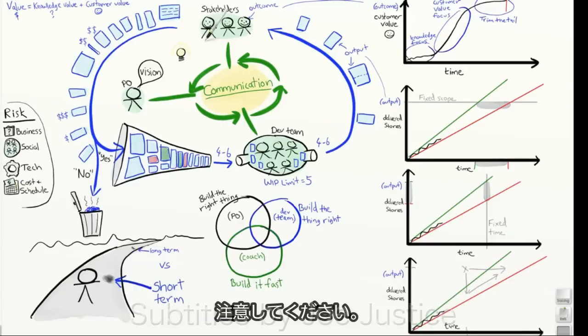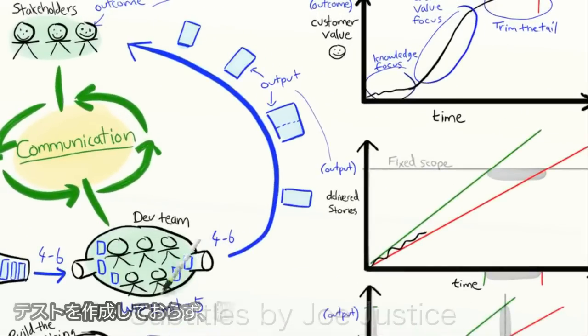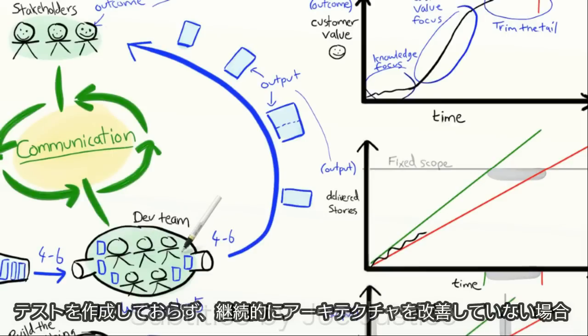Now, a word of warning. If the team is accumulating technical debt, if they're not writing tests and not continuously improving the architecture, then they will get slower and slower over time.